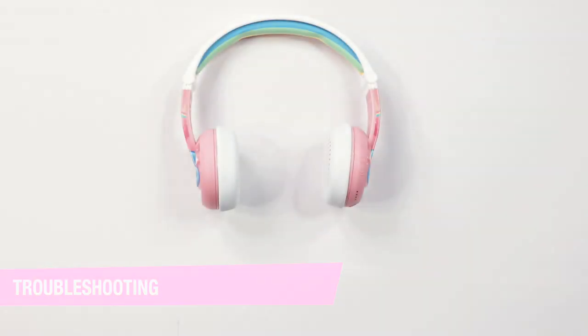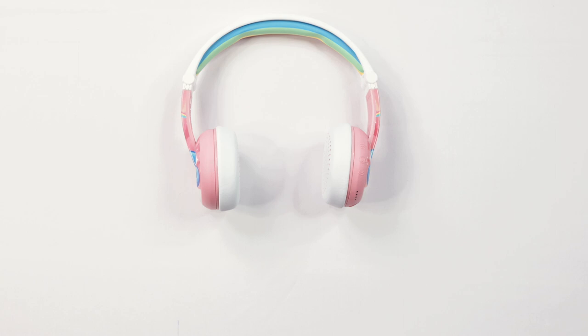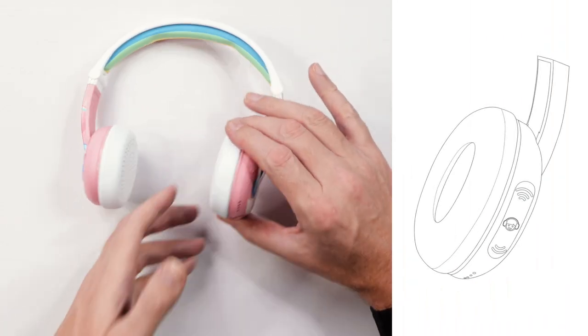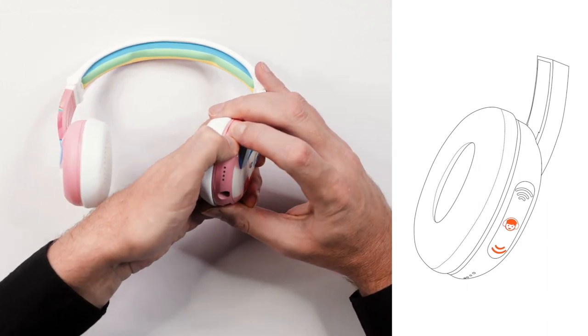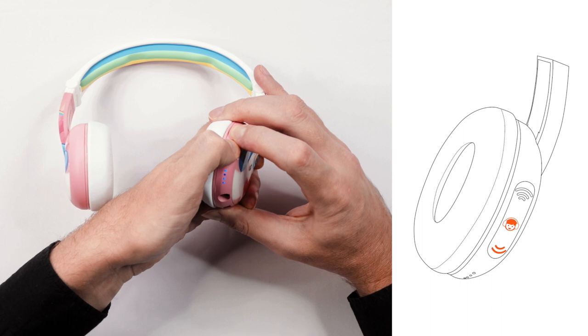If you need to reset the headphones for any reason, press the volume down button and multi-function button together for four seconds. This will clear the memory of the headphone and put it back to factory settings.